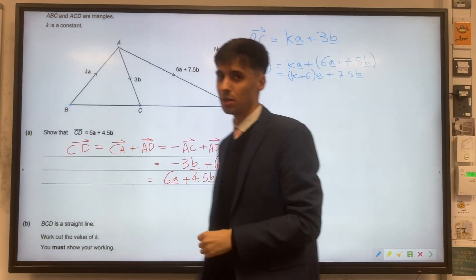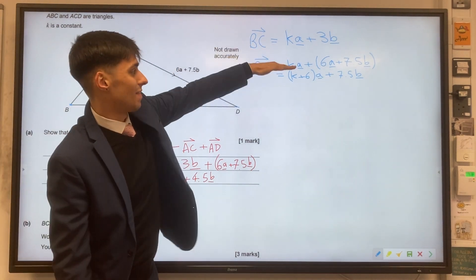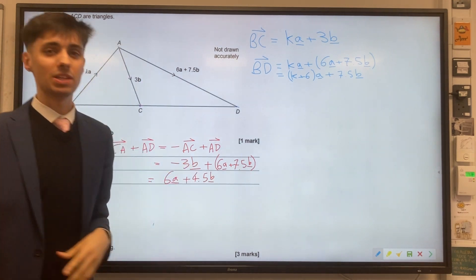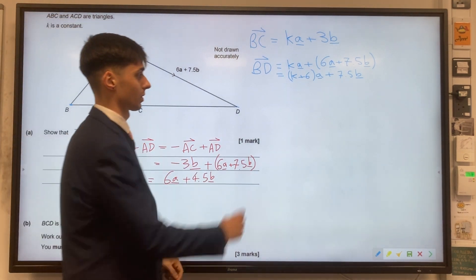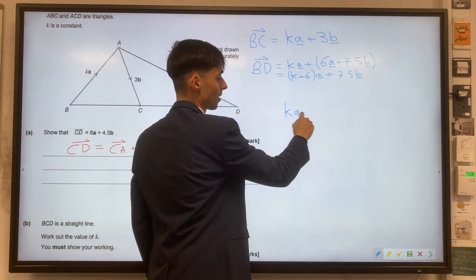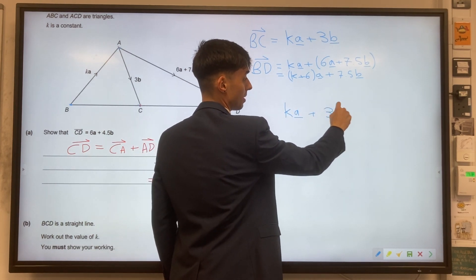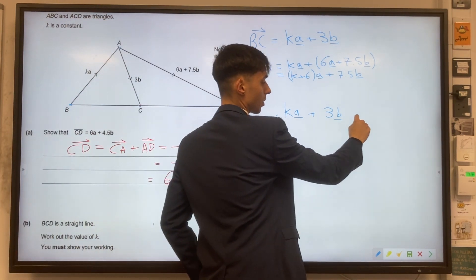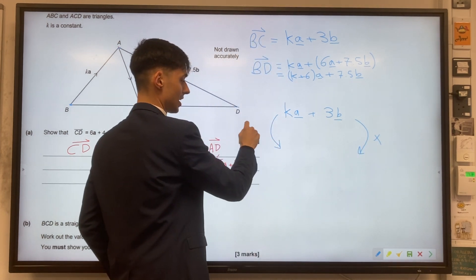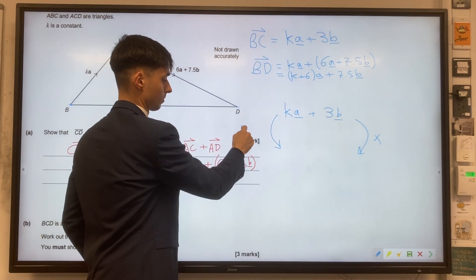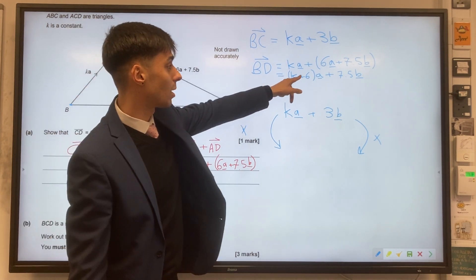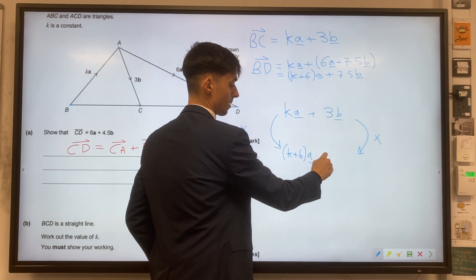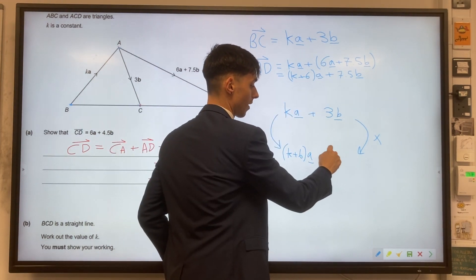So here's where the big idea comes in. We would like to say this vector is a multiple of this vector. Let's write it a little bit differently to make really clear what we're saying. We're saying that if you take KA plus 3B and you multiply this by something, we're going to end up with K plus 6A and also our plus 7.5B.